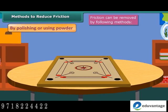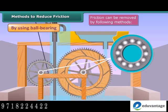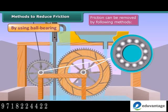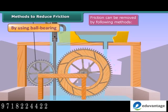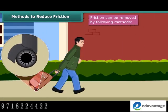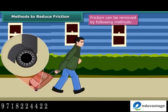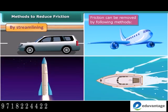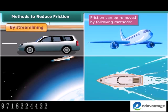Friction can be reduced by the following methods: by polishing or using powder, we can smooth rough surfaces to reduce friction. By using ball bearings — hollow circular devices containing small metal balls fitted around the moving part of a machine — sliding friction is converted into rolling friction. By using rollers and wheels, heavy objects like large suitcases can be carried easily by pulling. By streamlining, the bodies of cars, aeroplanes, and rockets are shaped to reduce air friction, and boats and ships are streamlined to reduce water friction.